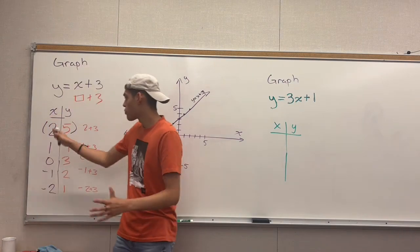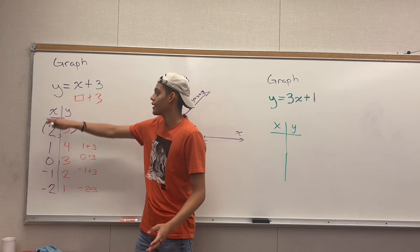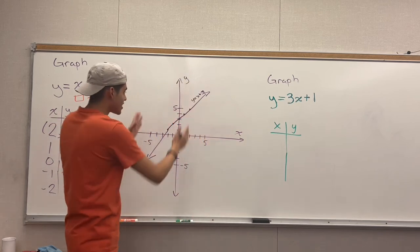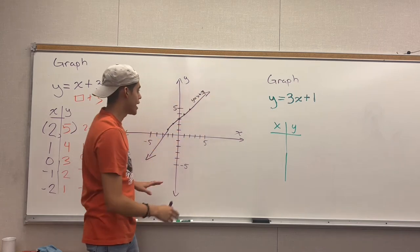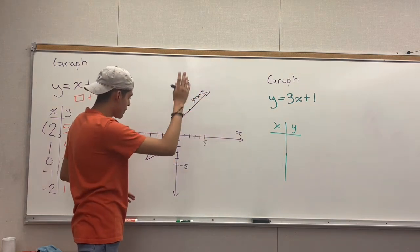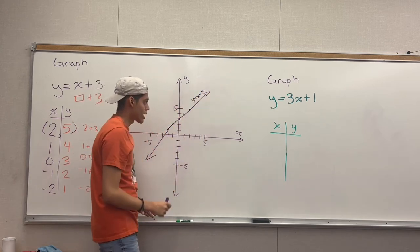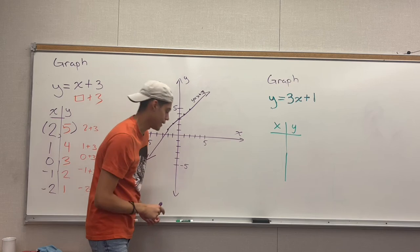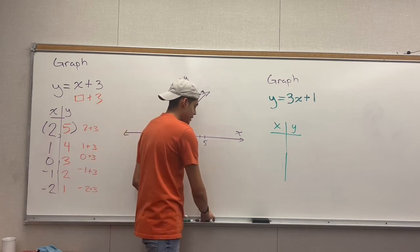For any other x values you want to pick — say negative 5 or x equals 10 — all of those points are going to land on this line, because the line continues on forever in both directions: to the right, to the left, up and down. Any point you pick will land on this line. Now let's move on to the next equation.